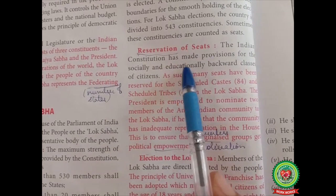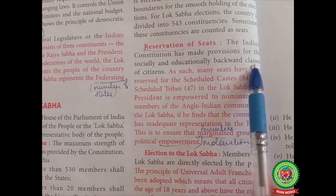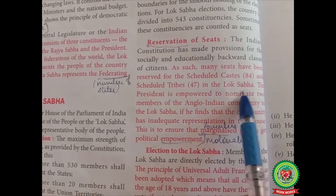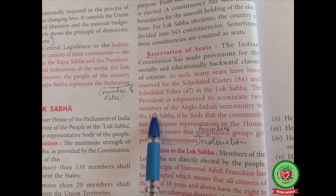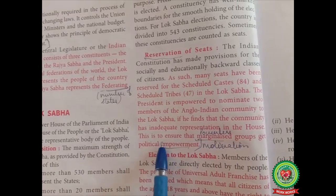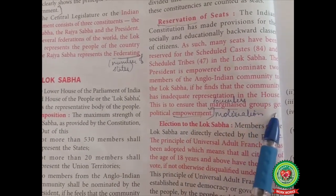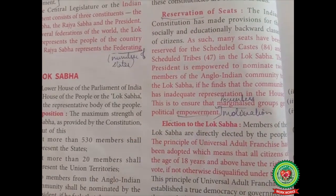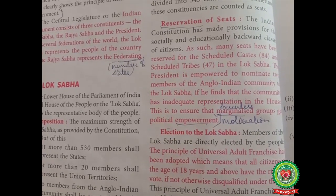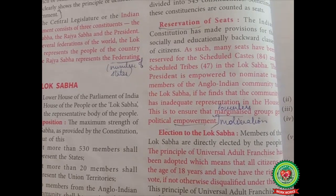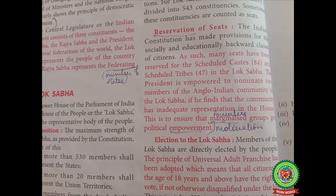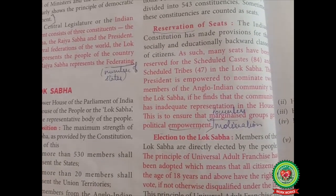Reservation of seats. The Indian constitution has made provision for the socially and educationally backward classes of citizens. Many seats have been reserved for Scheduled Castes (84) and Scheduled Tribes (47) in the Lok Sabha. The president is empowered to nominate two members of the Anglo-Indian community to the Lok Sabha if the community has inadequate representation. A total of 131 seats (24.03%) are reserved, ensuring that marginalized and powerless groups get political empowerment.